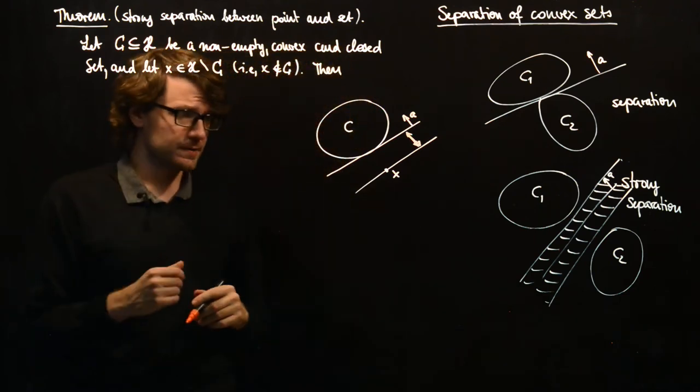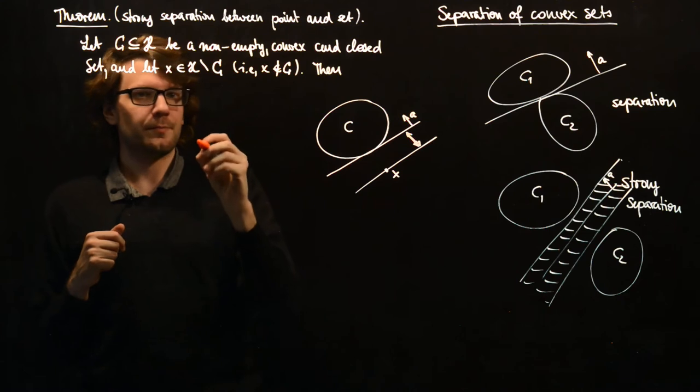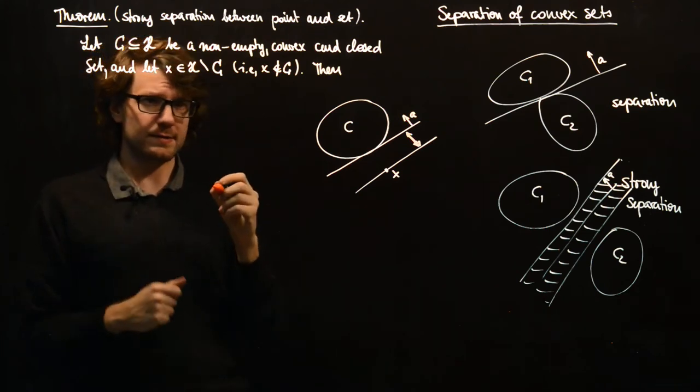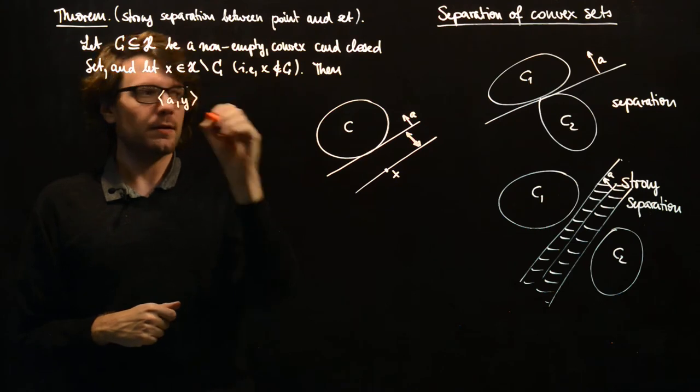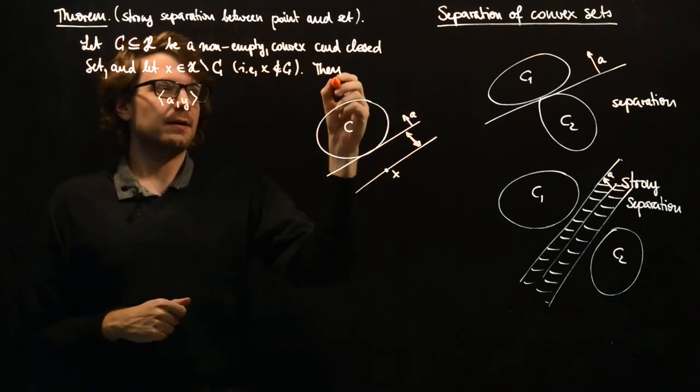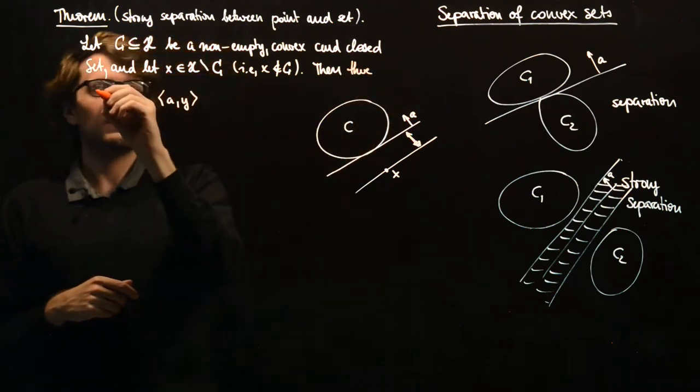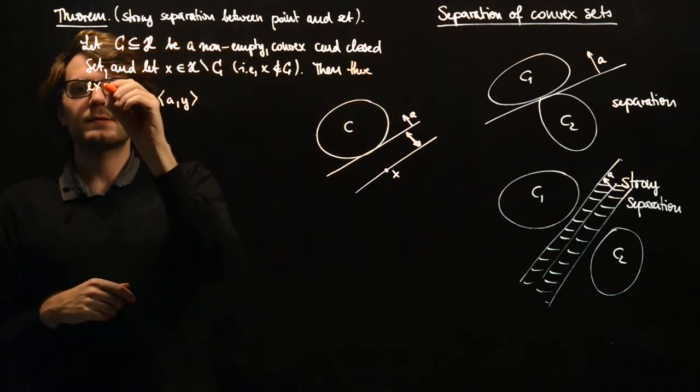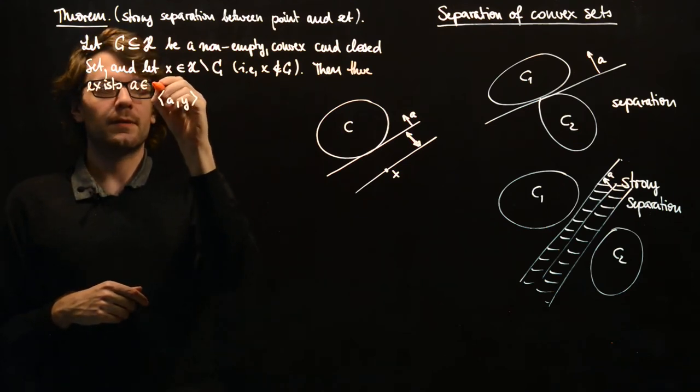How can we express this in formulas? Let's see it like this. So whenever we have Y in C, we can take the inner product of A, our normal vector, with Y. So then there exists A in H.